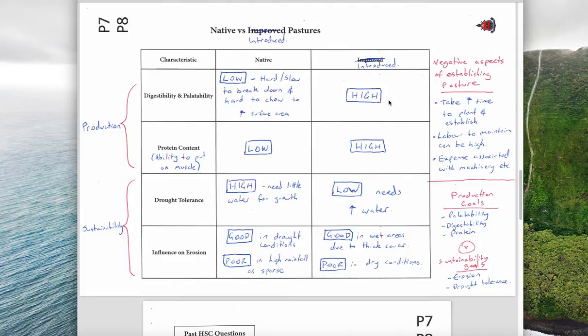On the other hand introduced pastures have high both protein content and digestibility, but their drought tolerance is low and they need a lot of water. Their influence on erosion is good if it's a lot of rain and they can stay alive, but if it's dry and hot they cannot survive very well.